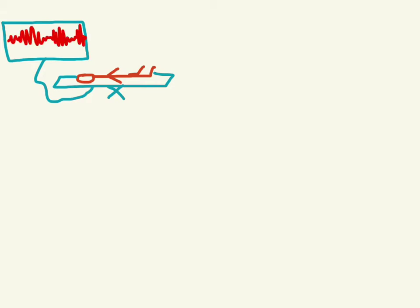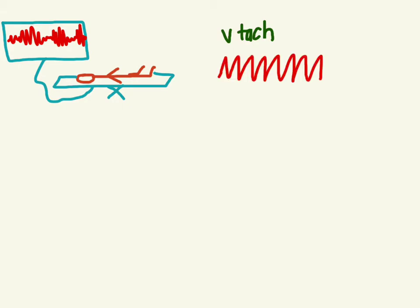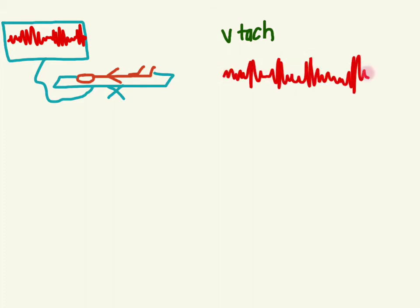Let's say you're working and the paramedics bring in a patient who's unresponsive, put him on the monitor and you see this. What is that? It's a kind of VTAC — not the normal VTAC that we're used to seeing, which looks more like this, in which the morphology is pretty similar throughout. This actually looks different throughout, so the morphology doesn't stay the same. This is actually called polymorphic VTAC. So your guy's unstable with a VTAC — what are you going to do? You're going to shock him.